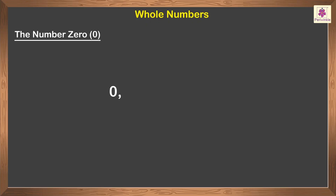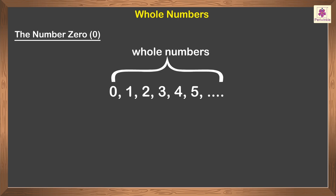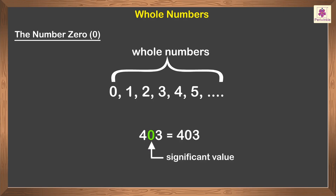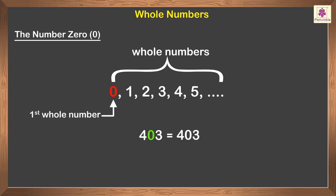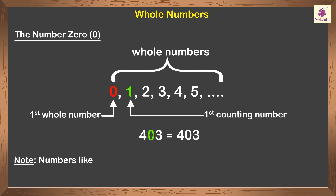The numbers zero, one, two, three, four, five, and so on are called whole numbers. Zero has no value if placed before a natural number, but it has a significant value when placed after a natural number. Although zero is the first whole number, the first counting number is one. Numbers like one upon two, one point eight, and two point two are not whole numbers.